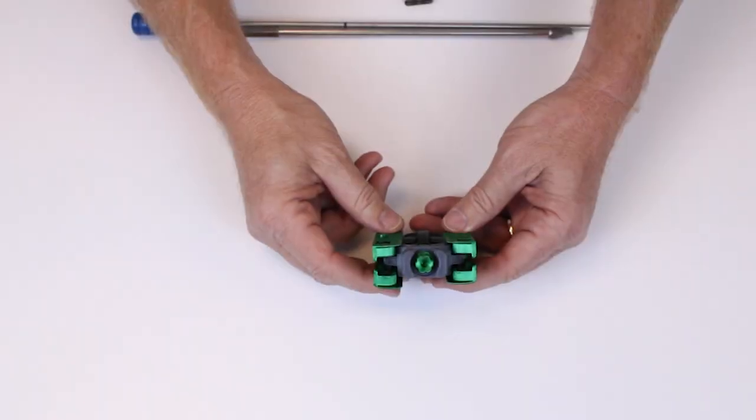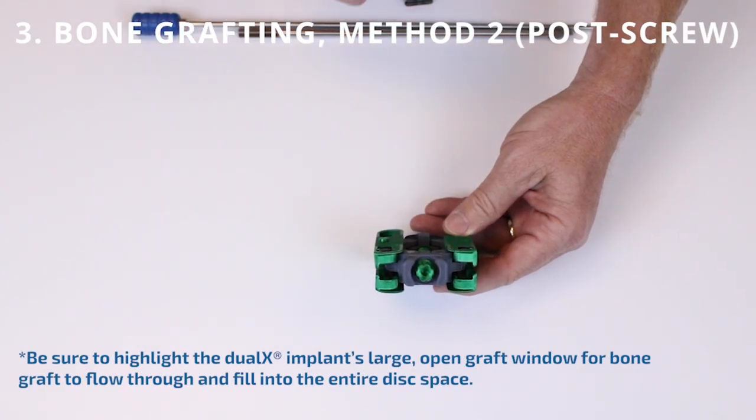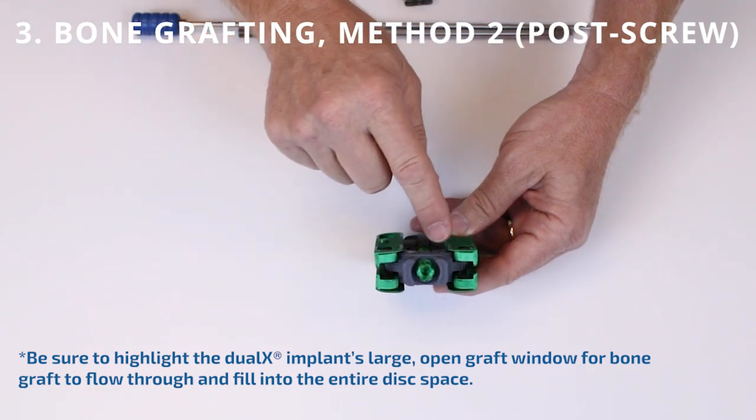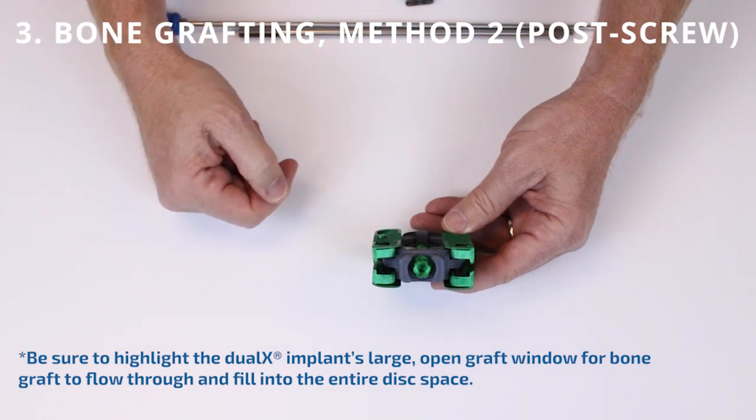The other method of bone grafting is to do so after the screw is delivered. The graft delivery tube with nozzle is designed to fit right in a recess above or below the lockout screw.